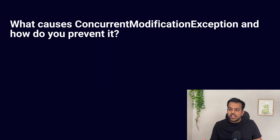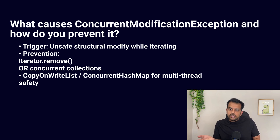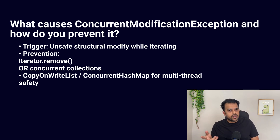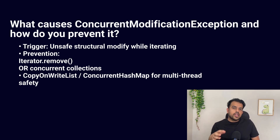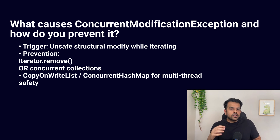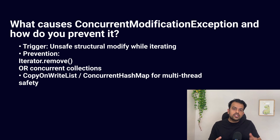The next question: what causes ConcurrentModificationException and how do you prevent it? This happens when one thread or loop updates a collection while another thread or loop is iterating it at the same time — for example, removing or adding elements directly from a list inside a for-each loop, because the for-each loop uses iterator internally without calling its remove() method. To prevent this, you can use the iterator's remove() method when deleting while traversing, or use concurrent-safe collections like CopyOnWriteArrayList or ConcurrentHashMap, which are built to handle changes safely while using loops or threads. Don't just name the error — clearly explain that modifying the collection during traversal is unsafe, then provide the solution.